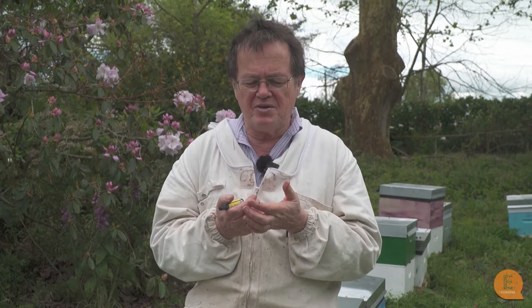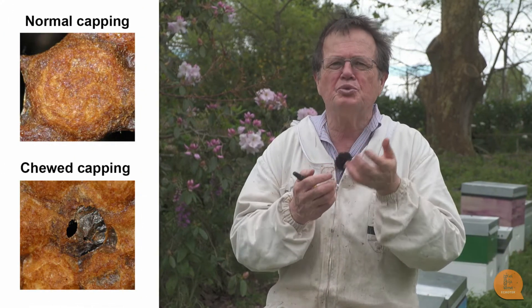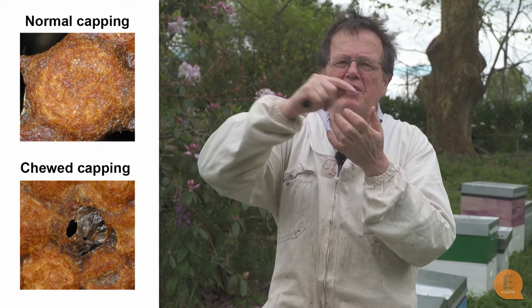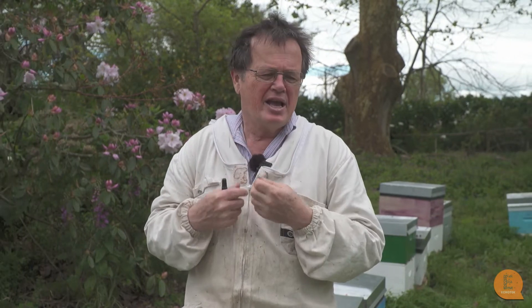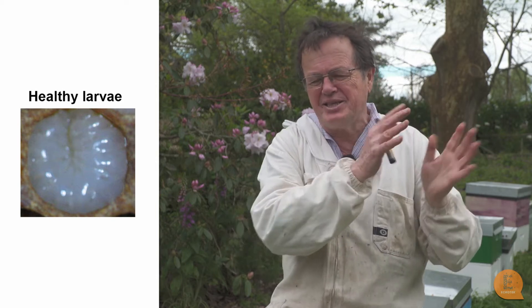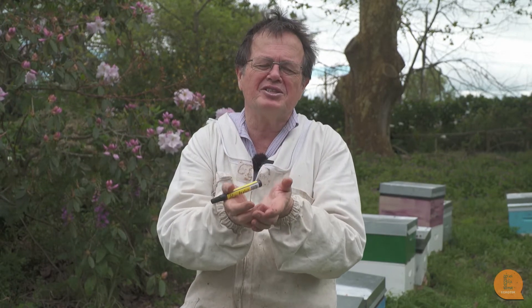We're lucky with American foulbrood in that it has some very classic symptoms that make it easy, once you find a diseased larvae, to check whether it's got AFB or not. The first thing you're always looking for are cells with chewed cappings. When a bee is emerging you see a nice regular circle around the cell as it pushes the cap off. If a cell is just being capped over you get a very round hole in the centre and you look through it and see a nice white larvae. A perforated capping means the bees know there's something wrong in the cell and they've started to chew a hole in it with the intent of removing the capping and throwing what's inside out.